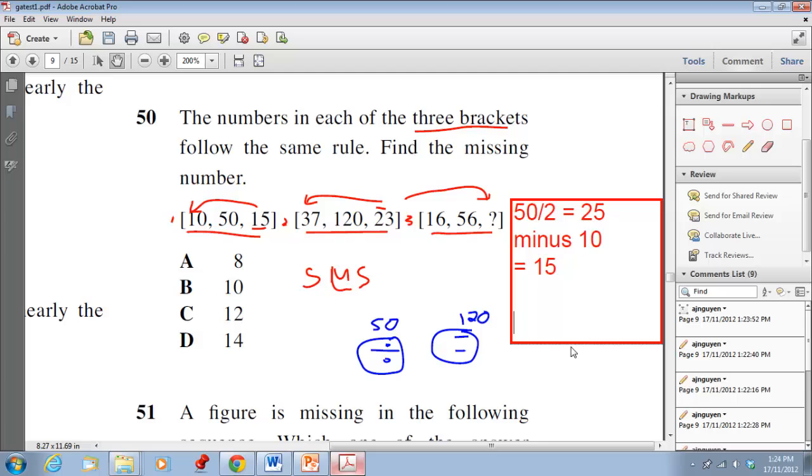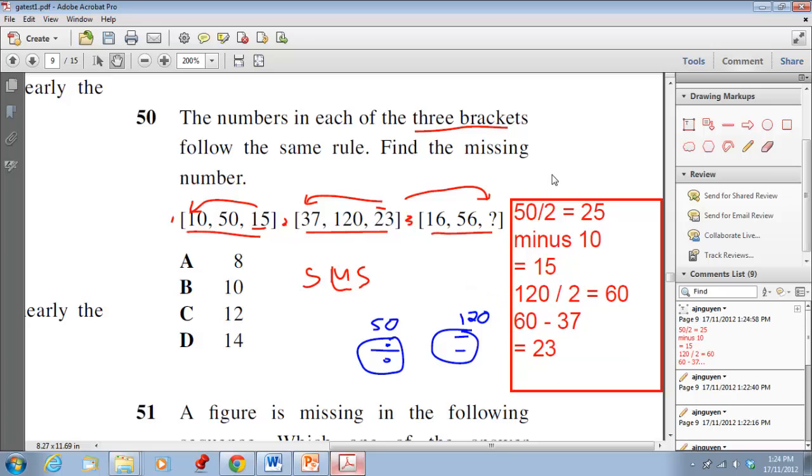Now what we do is then we try it, we apply it to the second group of numbers. 120 divided by 2 equals 60. Then 60 less 37 is 23, and hence you have your answer. What the pattern that holds all of these together is the second number divided by 2 minus first number. And that's your pattern.